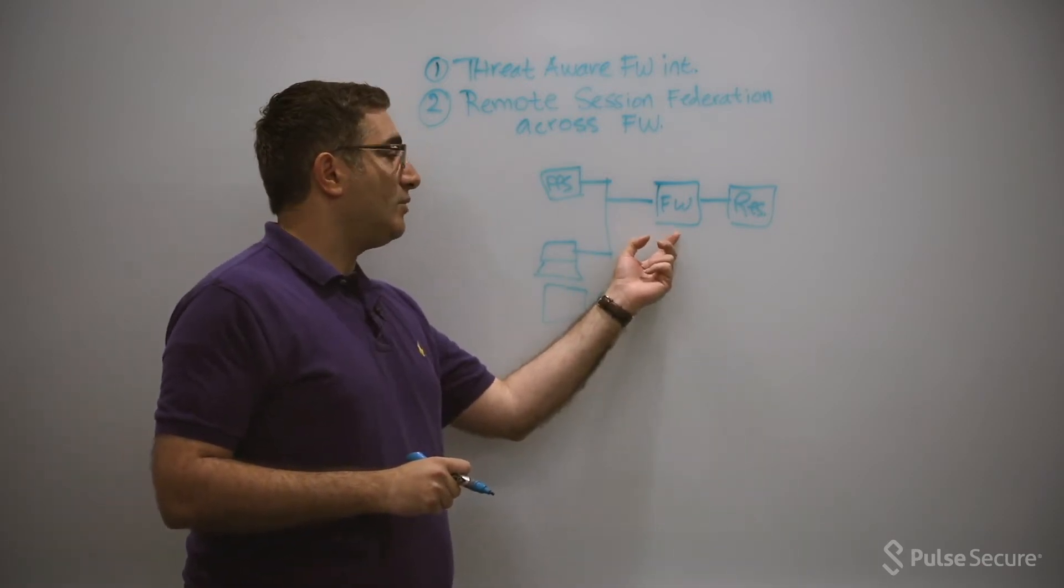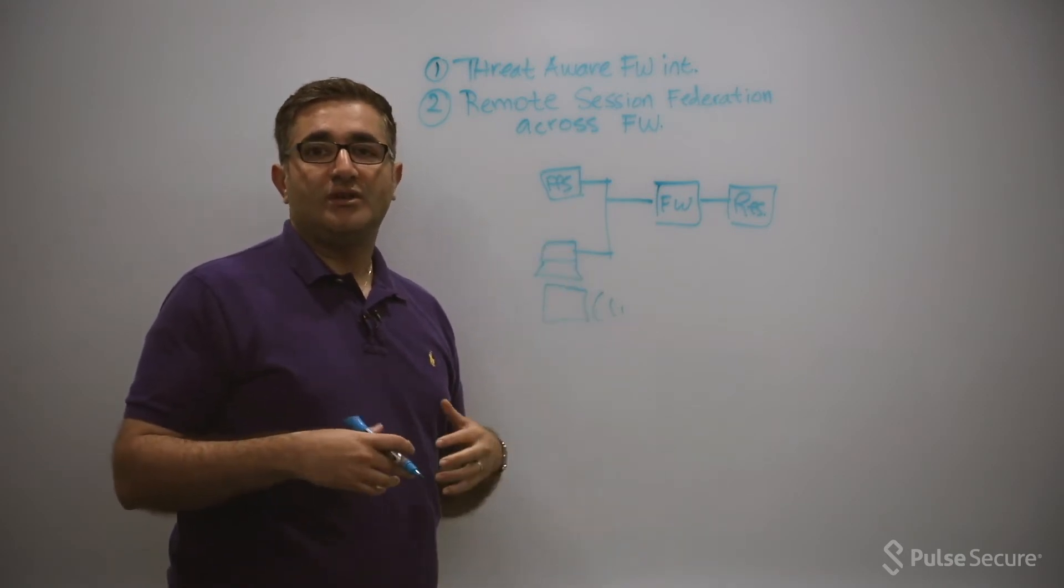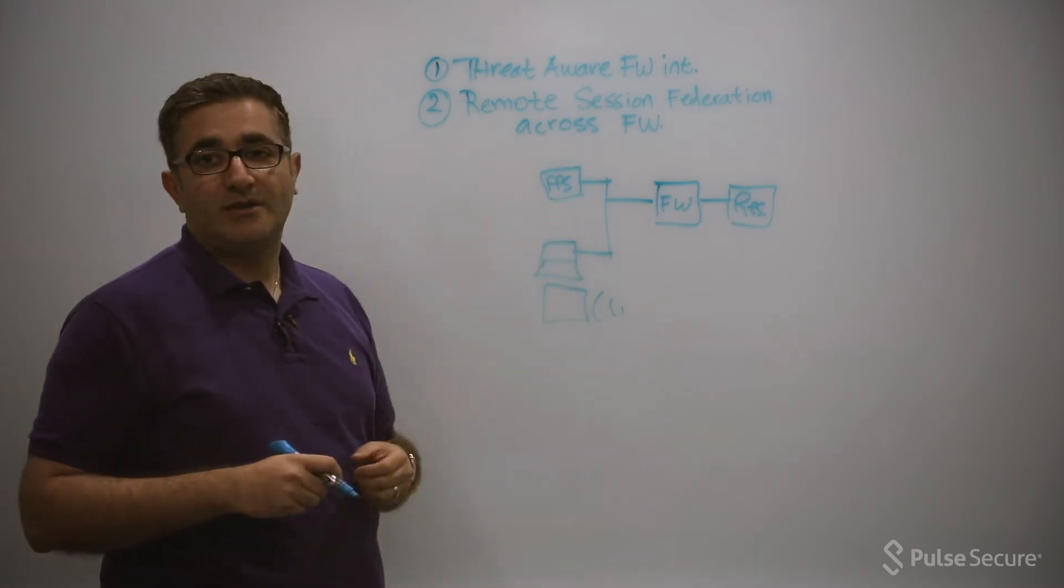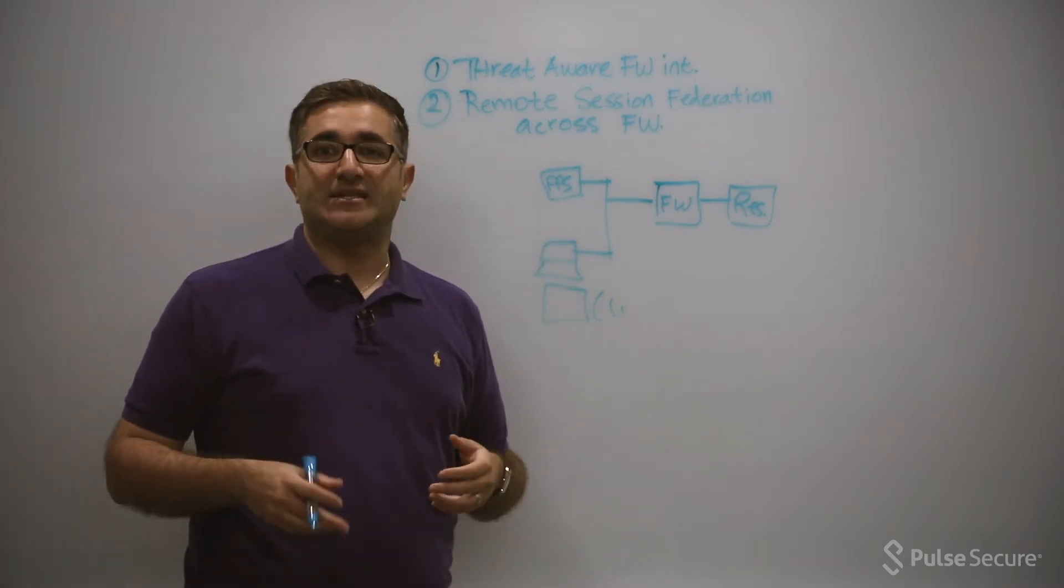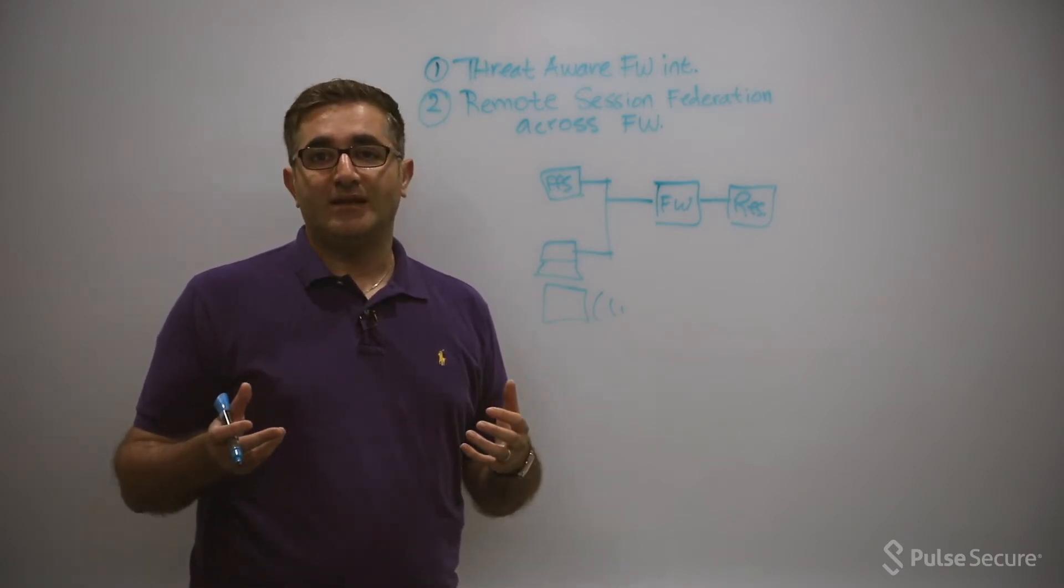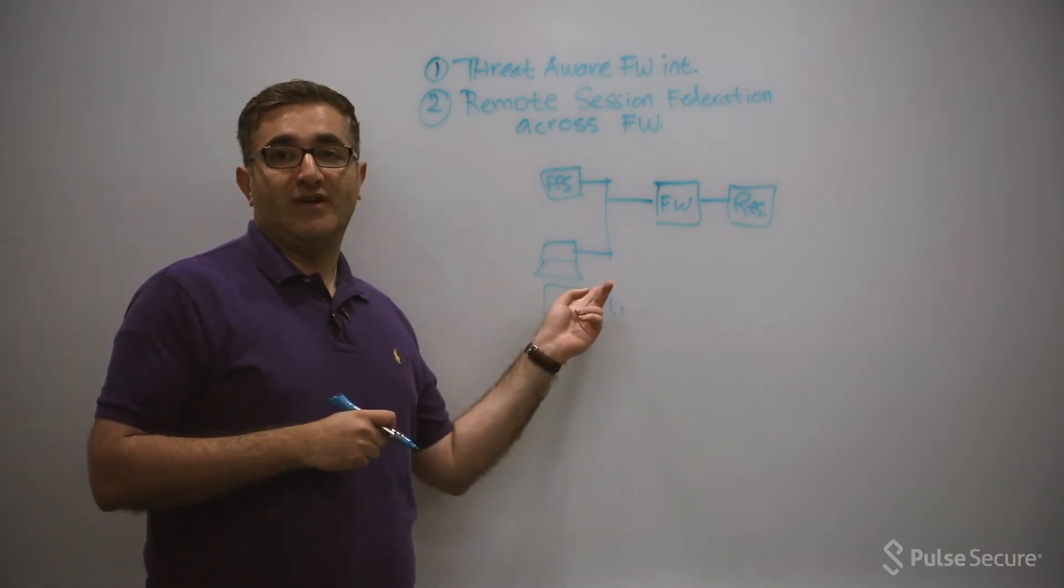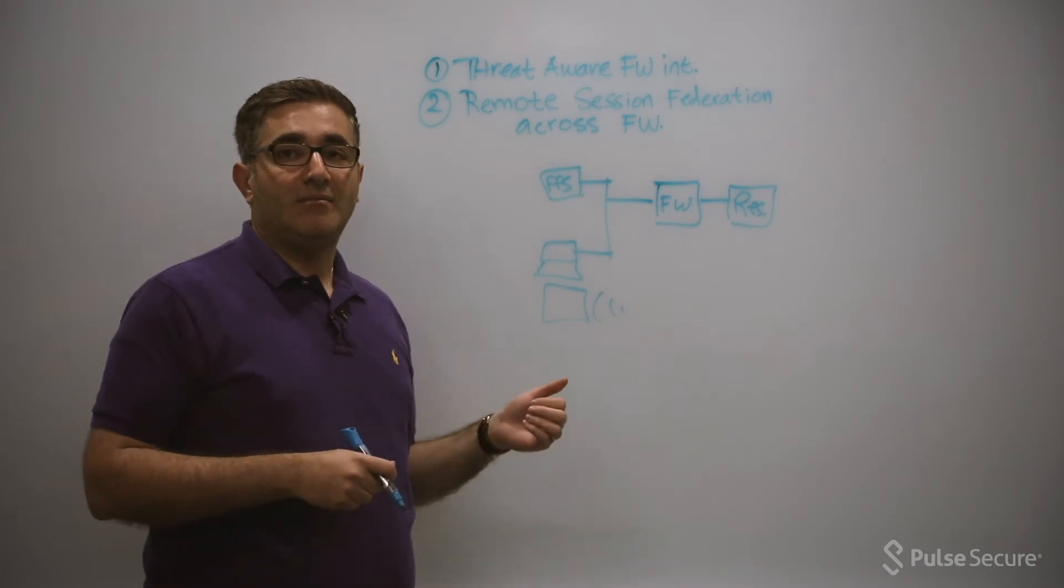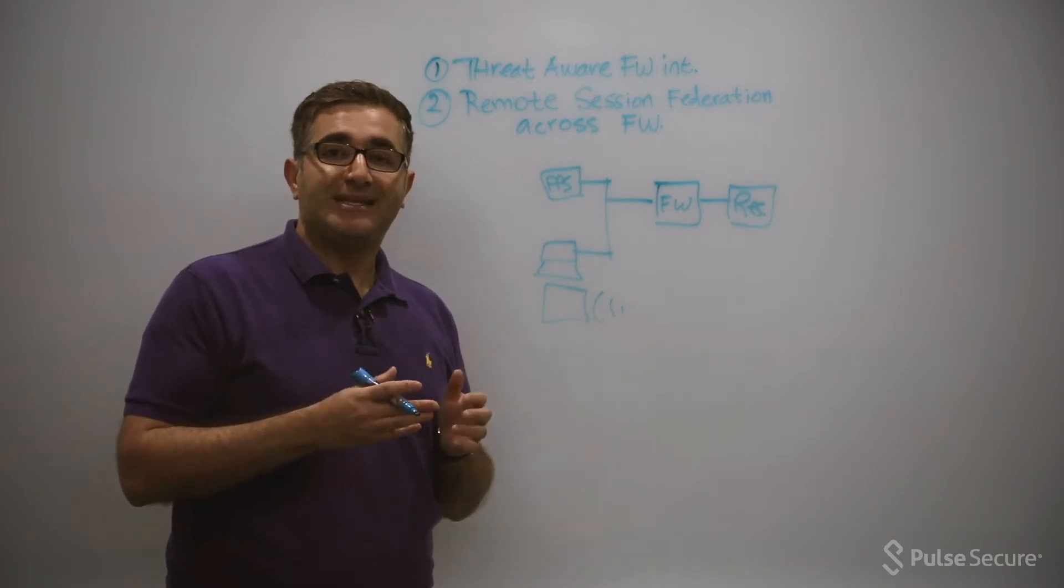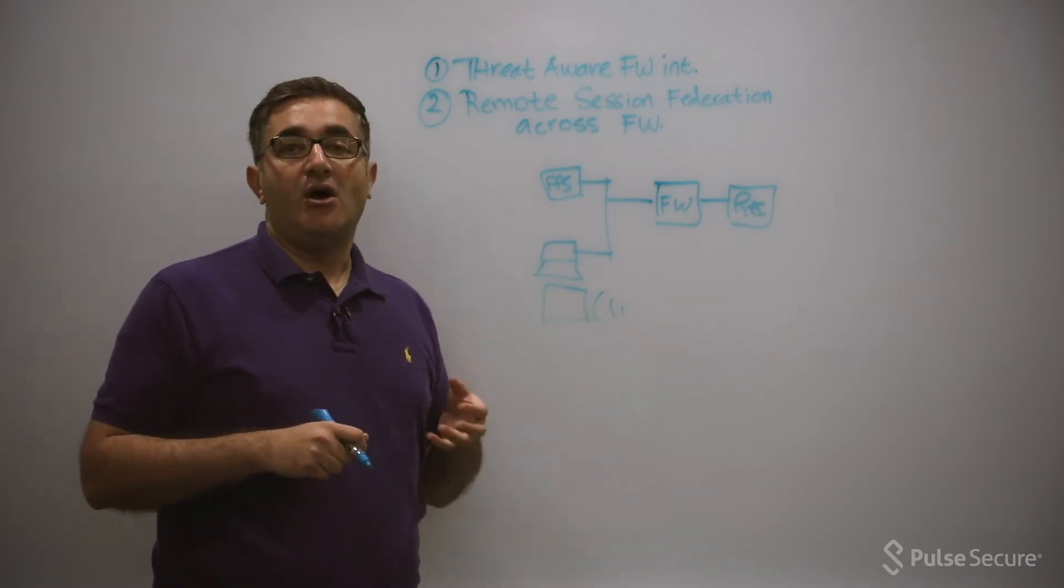So as they detect this anomalous behavior, the firewall will actually send information back to Policy Secure, which is really the central decision point at this time, and then Policy Secure can make a decision on how to react. It could be something it simply just logs, it could be something that it enforces. So the few mechanisms of enforcing can be, it can put this device in a remediation VLAN, it can possibly change the role of the user to limit the access, or it can actually disable the user so that the user cannot authenticate again.